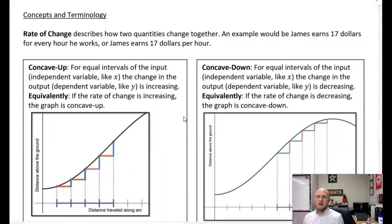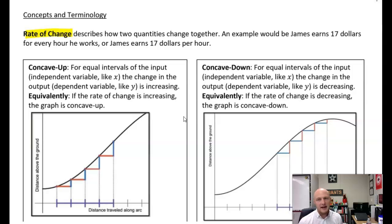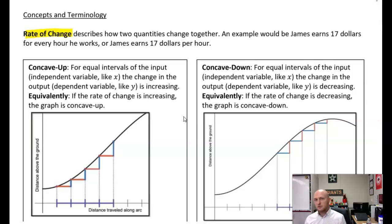A couple of concepts in terminology. First off is this idea of rate of change — this describes how two quantities change together. An example of this would be: James earns $17 for every hour he works, or James earns $17 per hour. The rate of change is: for every hour worked, James earns $17.